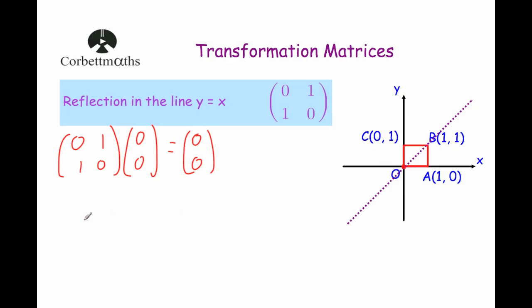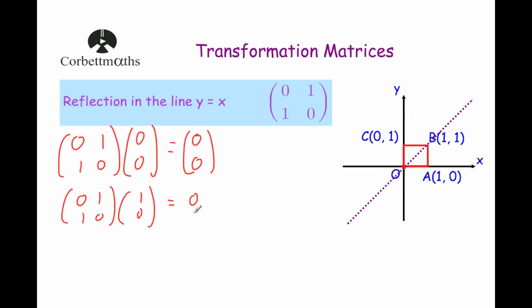Next, point A. We take the matrix [0, 1, 1, 0] and multiply it by the point (1, 0). Multiplying the first row by the column: 0 times 1 is 0, plus 1 times 0 is 0, adding them gives 0. And the second row: 1 times 1 is 1, plus 0 times 0 is 0, adding them gives 1. So point A will be moved to the point (0, 1) — that's where A dash will be.